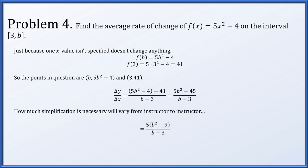We factor a 5 out of the numerator, leaving behind b² - 9, which we recognize as the difference of two squares. This allows us to cancel the shared factor of (b - 3), giving us 5(b + 3). However, when b equals 3, that cancellation is not valid. So the average rate of change is 5(b + 3), provided b ≠ 3. Of course, if b were 3, the interval would only have one point in it, which is why that value is excluded.